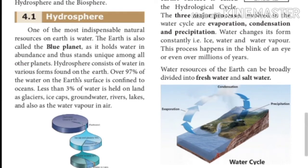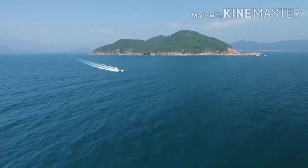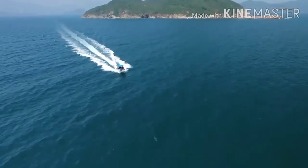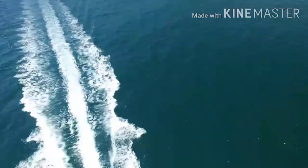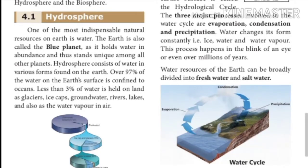One of the most indispensable natural resources on earth is water. The earth is also called the blue planet. Why? As it holds water in abundance and thus stands unique among all other planets. Hydrosphere consists of water in various forms found on the earth. Over 97% of the water on the earth's surface is confined to oceans. Less than 3% of water is held on land as glaciers, ice caps, groundwater, rivers, lakes, and also as water vapor in air.